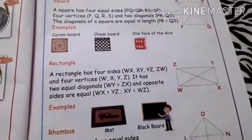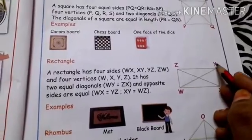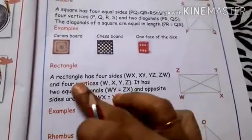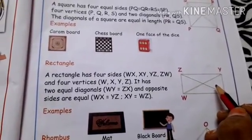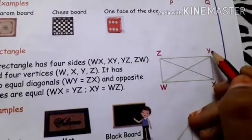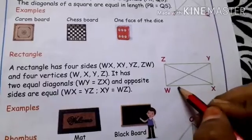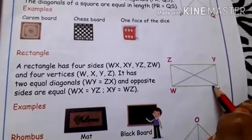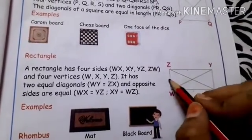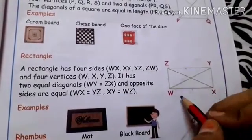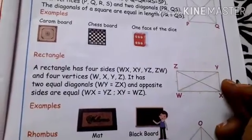Rectangle: a rectangle has four sides — WX, XY, YZ, and ZW — and four vertices W, X, Y, Z. It has two equal diagonals: WY and XZ. The opposite sides of a rectangle are equal — WX equals ZY, and XY equals WZ.